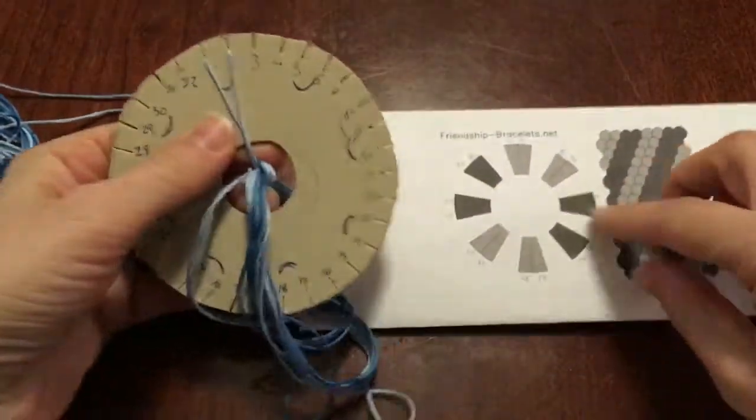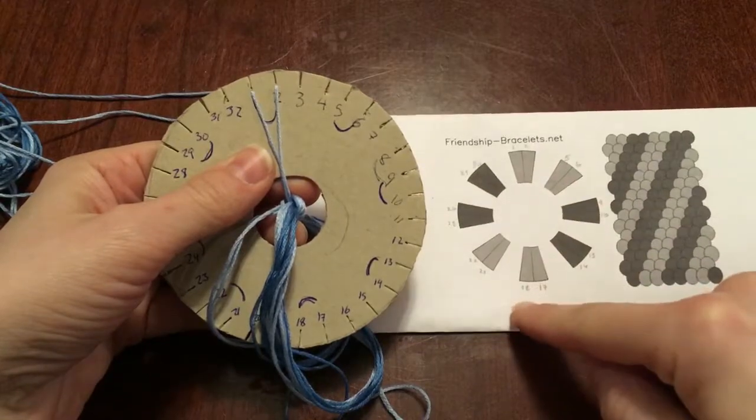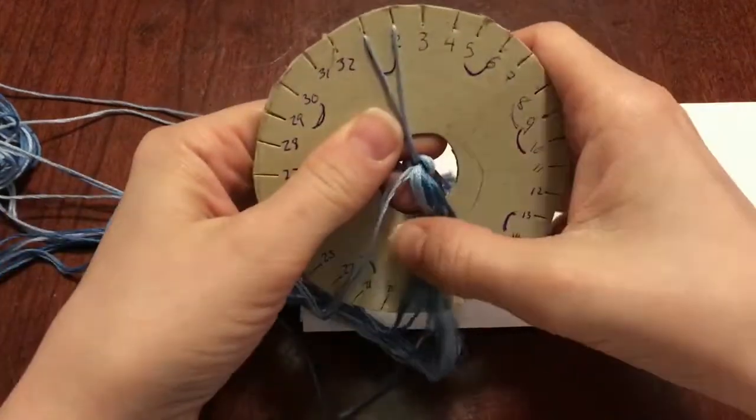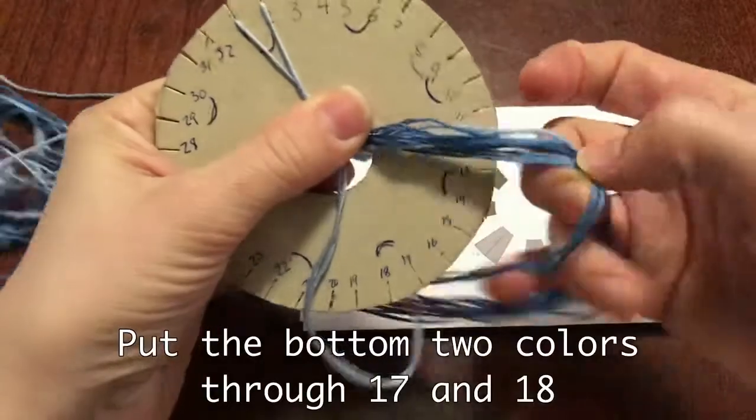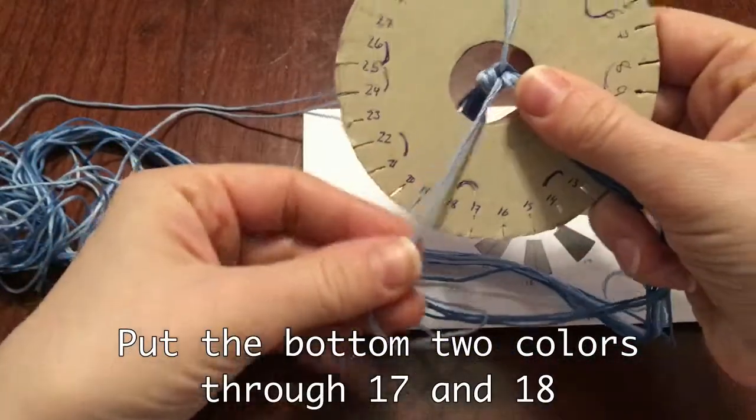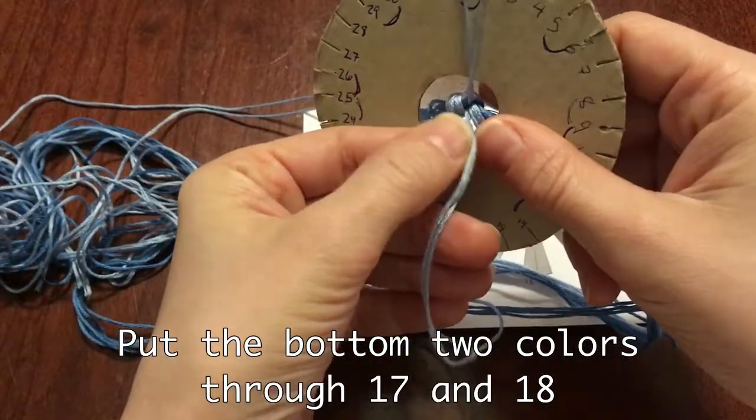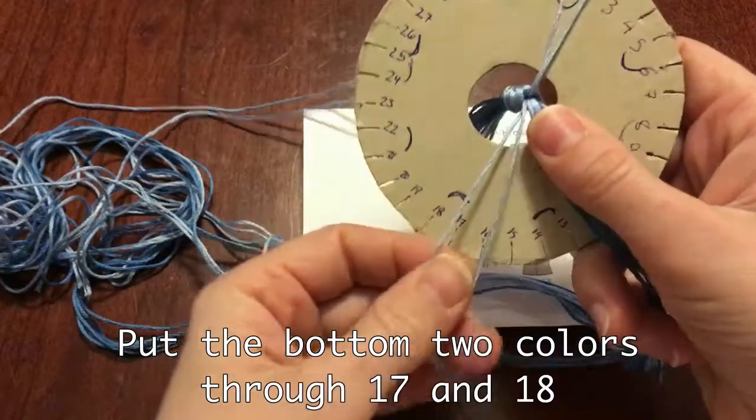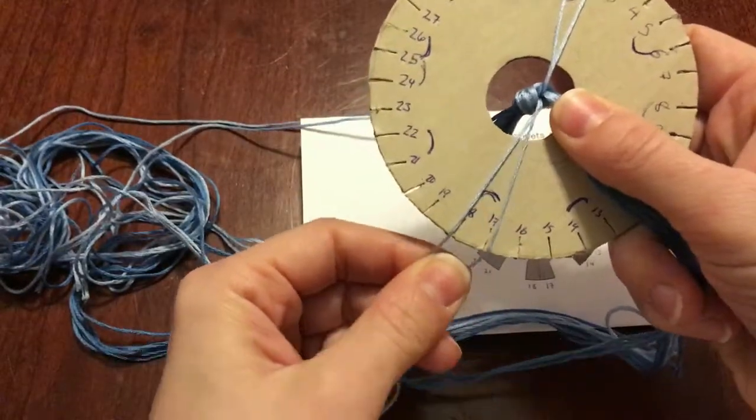I find it easier to go across the disk to 17 and 18, which are also light blue. So take two light blue strings and put them through 17 and 18.